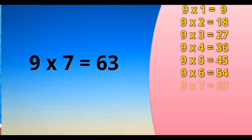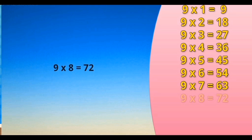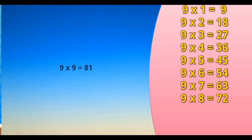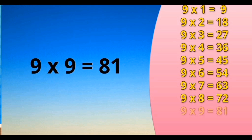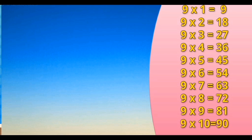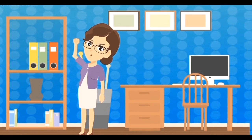9 times 7 is 63. 9 times 8 is 72. 9 times 9 is 81. 9 times 10 is 90.